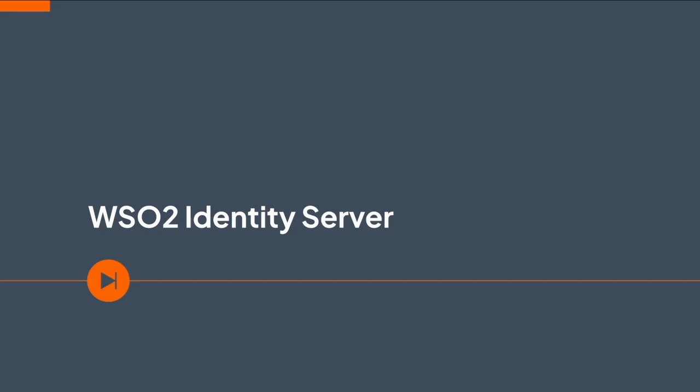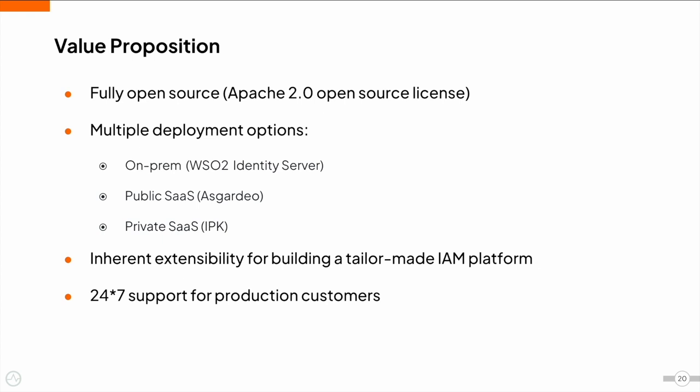Now that you have learned the main concepts of an IAM solution, let's learn about WSO2 Identity Server. WSO2 Identity Server is a 100% open-source IAM solution under the business-friendly Apache 2.0 license. Identity Server comes with multiple deployment options. Apart from on-premises deployments, Asgardeo is our public SaaS solution and IPK is the private SaaS solution.